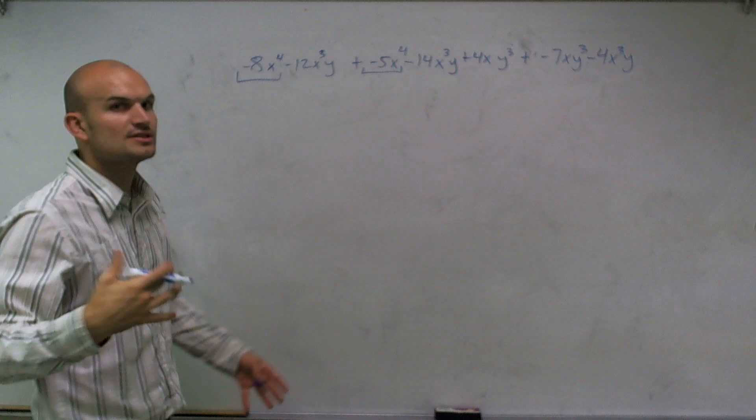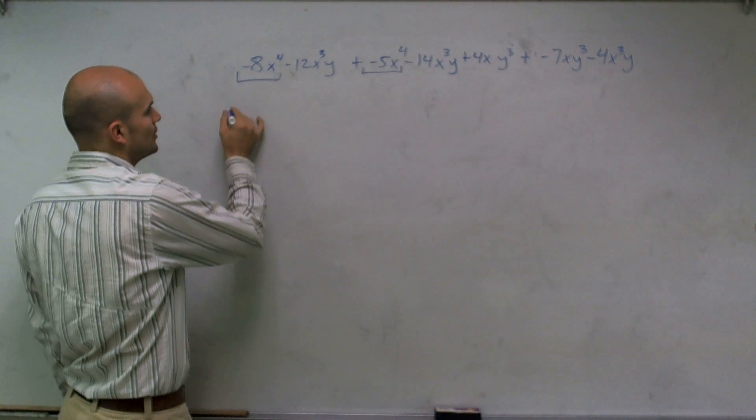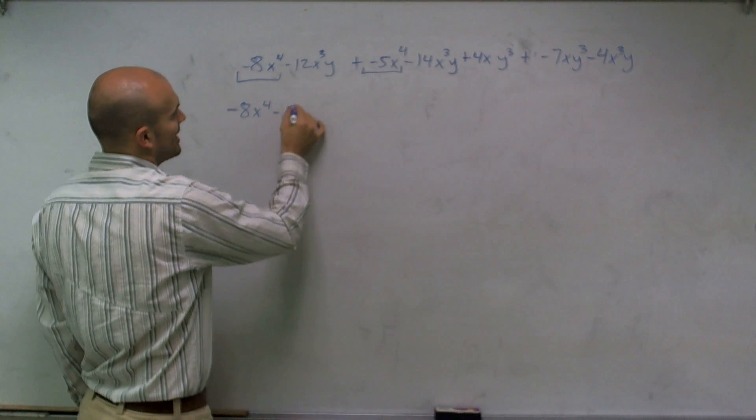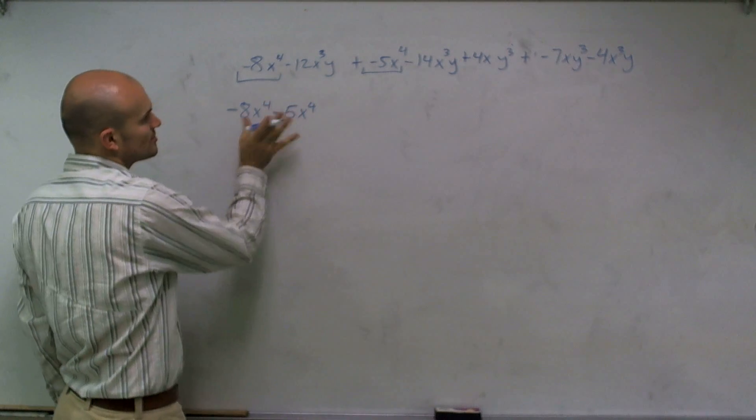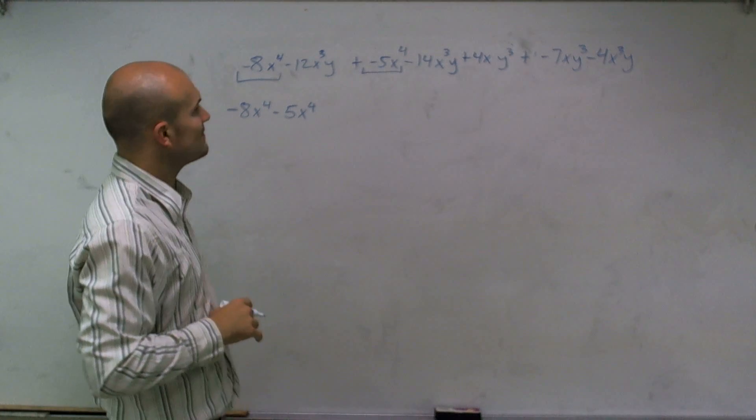So what I'm going to do for this problem, just to kind of show you again, seeing everything, I'm going to rewrite this whole polynomial with terms that I can combine. So first two terms I know I can combine, a negative 8x to the fourth minus my 5x to the fourth.